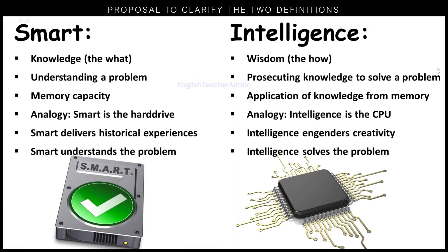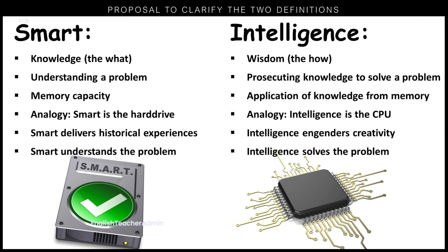Our proposal is this: smart brings us knowledge, but intelligence brings us wisdom. Smart understands a problem, whereas intelligence prosecutes knowledge to solve a problem. Smart has to do with memory capacity; intelligence has to do with the application of knowledge from that memory.